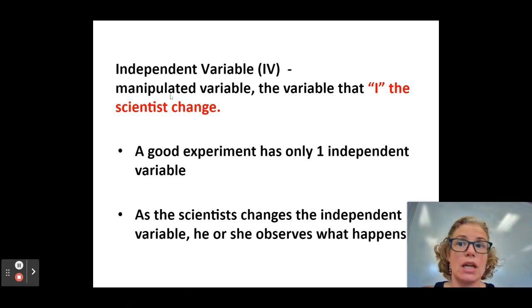The independent variable is sometimes called the manipulated variable because it's what the scientist is changing. I'm manipulating it. But the best way to remember it I find is that it's what I, the scientist, am changing. See how independent variable starts with I? It's what I'm changing is the independent variable. I'm the scientist. I'm changing it. A good experiment has only one independent variable. So we're going to change that one thing and then see what happens and that's going to allow us to determine cause and effect.